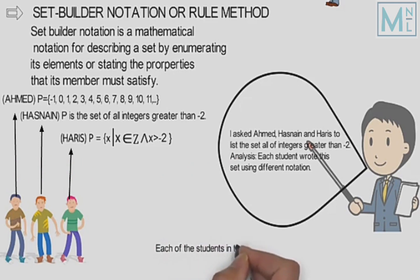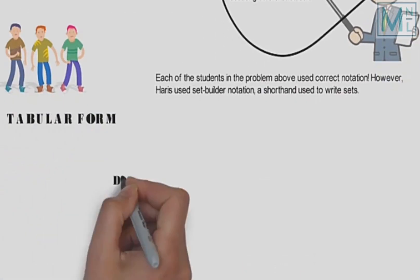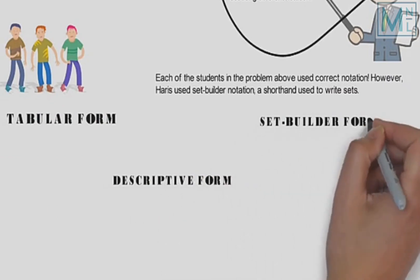Har student ne sahi set banaya hai, lekin Haris ne jo set banaya hai, woh asan aur chota method hai kisi badae set ko present karne ka. Ab hum ek example solve karte hain tino forms mein. Misal ke taur par, tabular form mein hum ek set banate hain first three natural numbers ka.